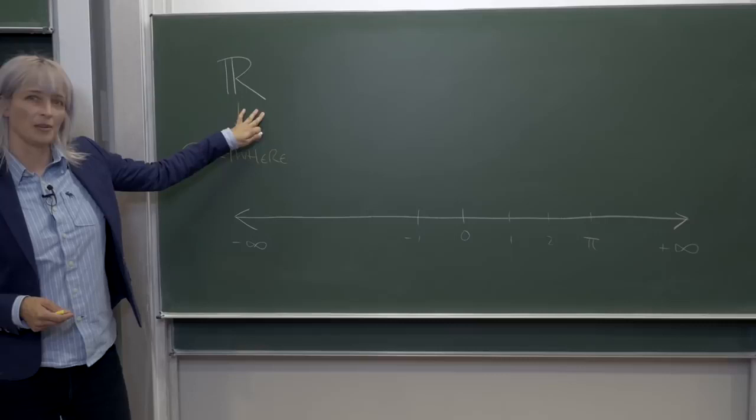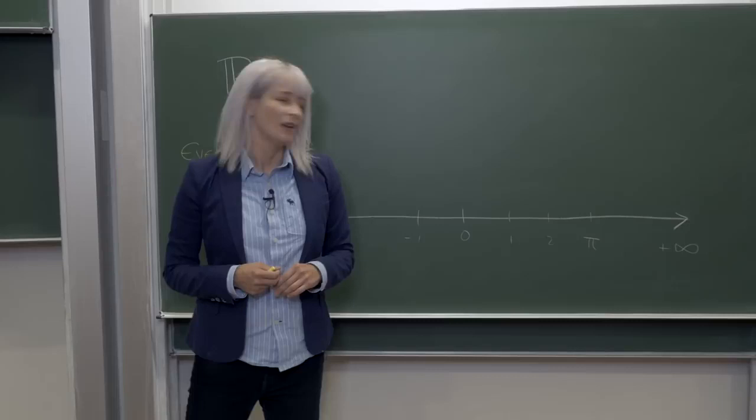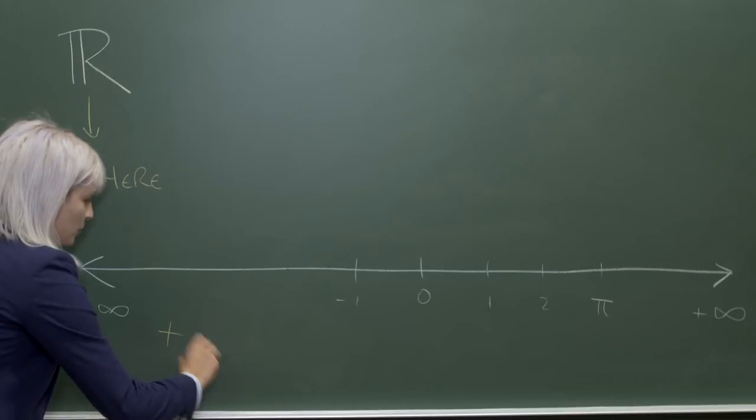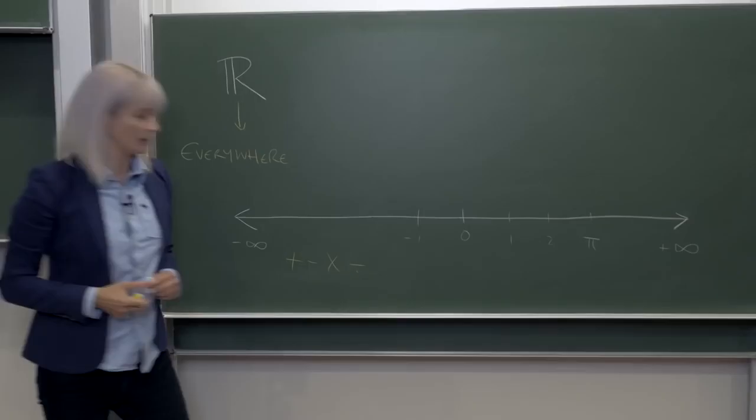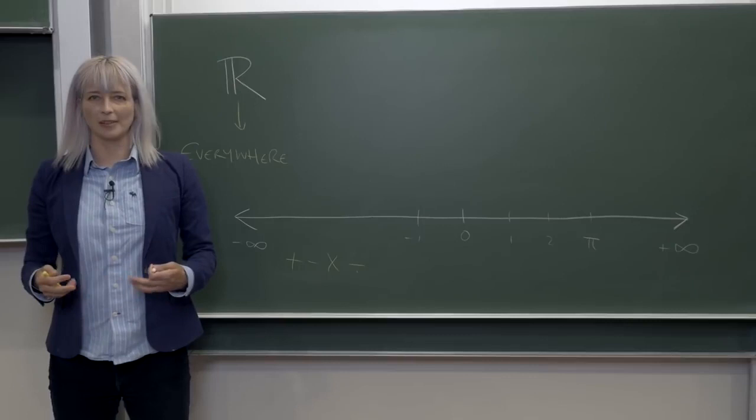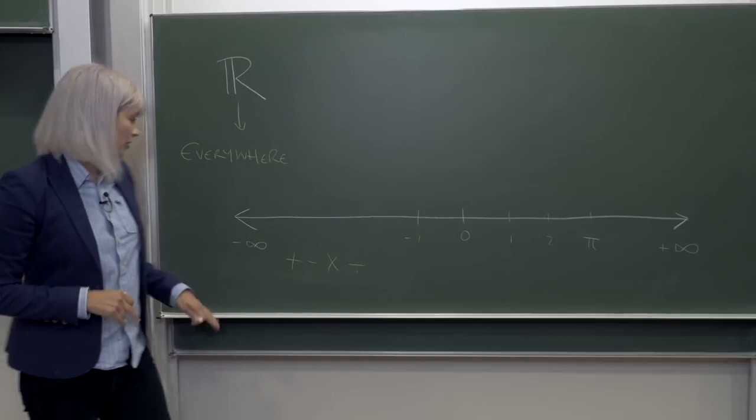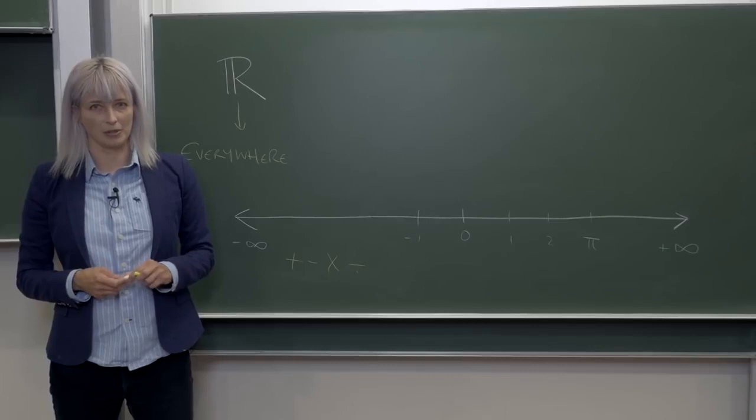The number system we use in everyday life is called the real numbers. The real numbers span from minus infinity to plus infinity with everything in between. One of the things that makes the real numbers so useful is that we can always add, subtract, multiply, and divide any two real numbers. So you might ask, what kinds of number systems could there be out there which generalize the real numbers whereby you can always add, subtract, multiply, and divide?